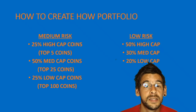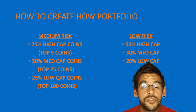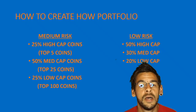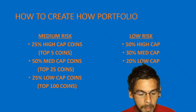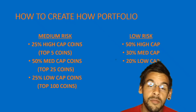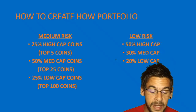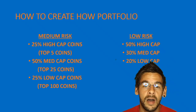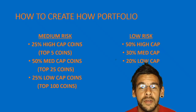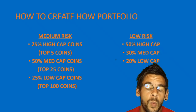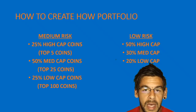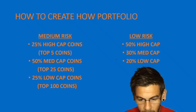These include things like Stellar, Tron, NEO, IOTA, and lots of other coins. And then the remaining 25% in low cap coins — anything below that top 25 — for example Waves, Steam, and many others out there.